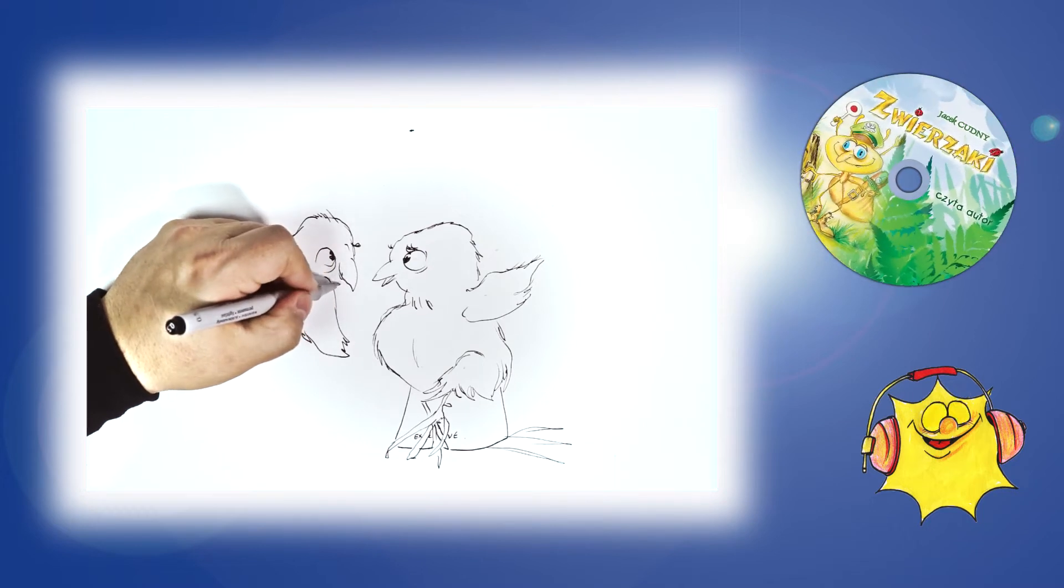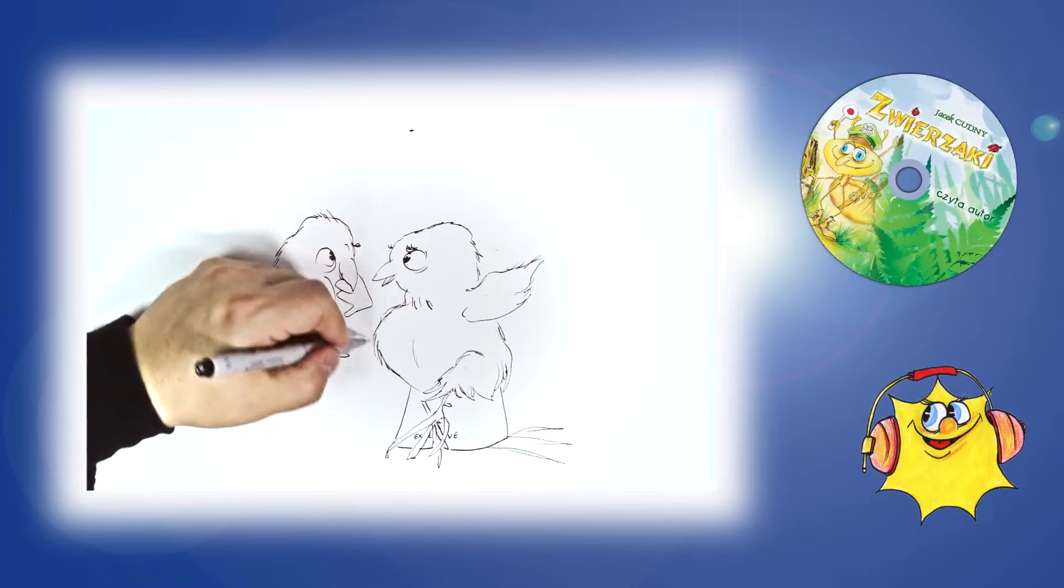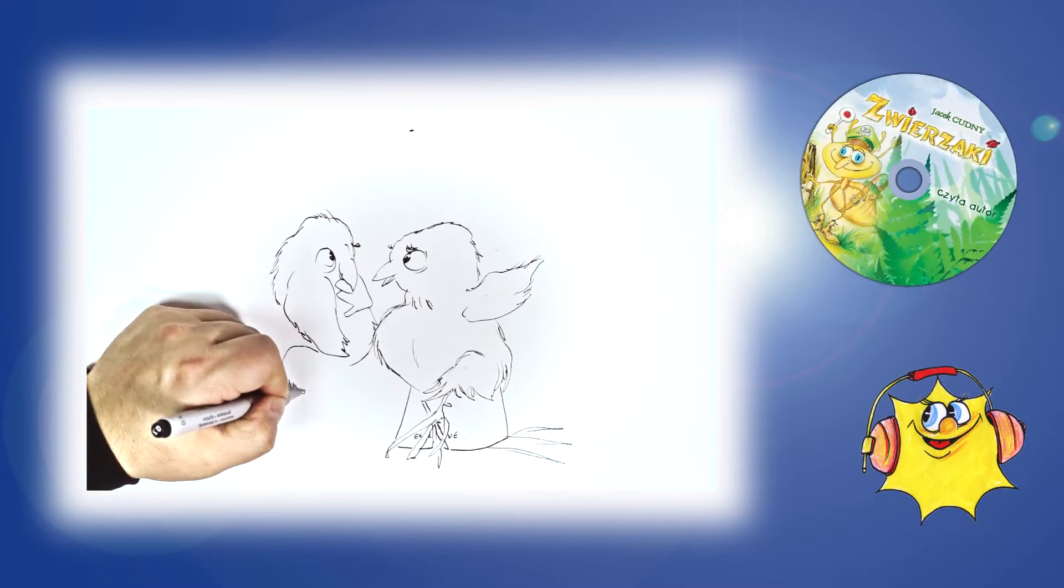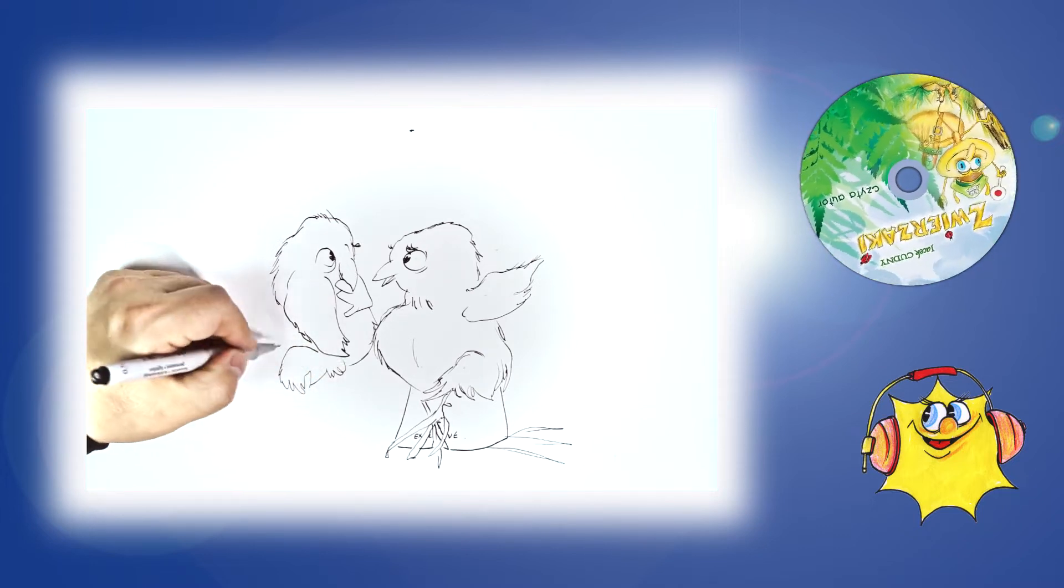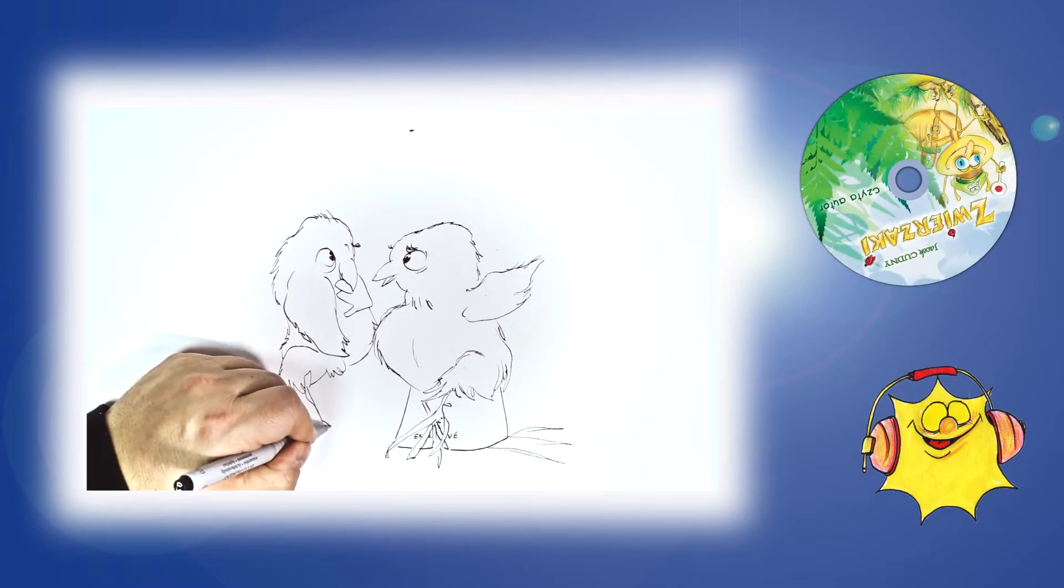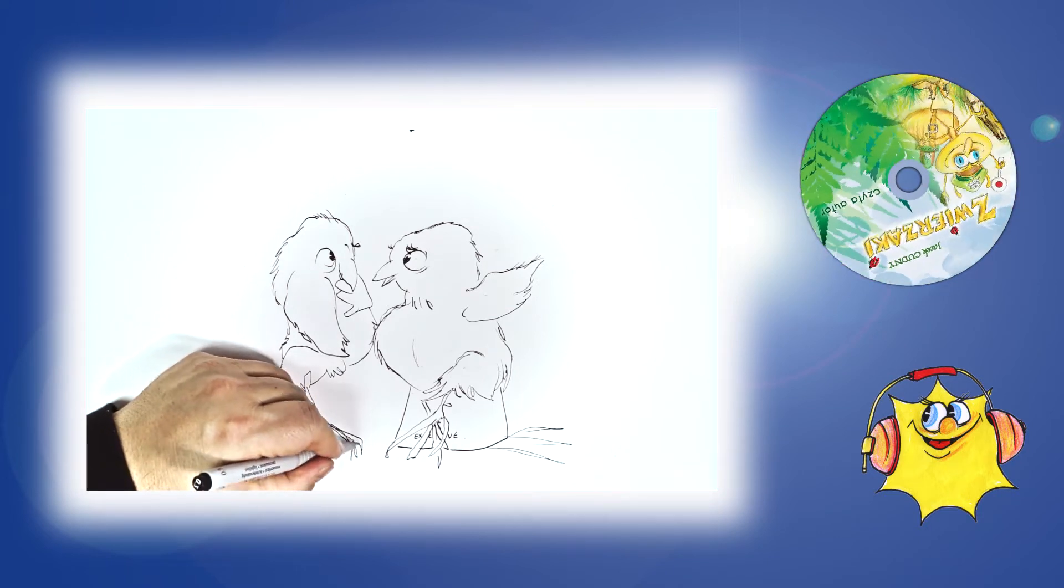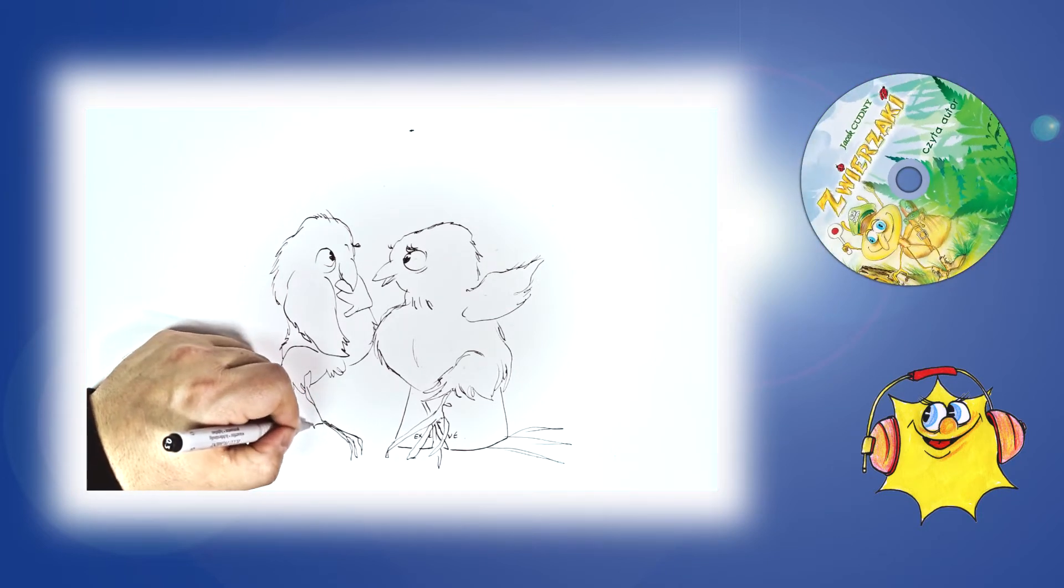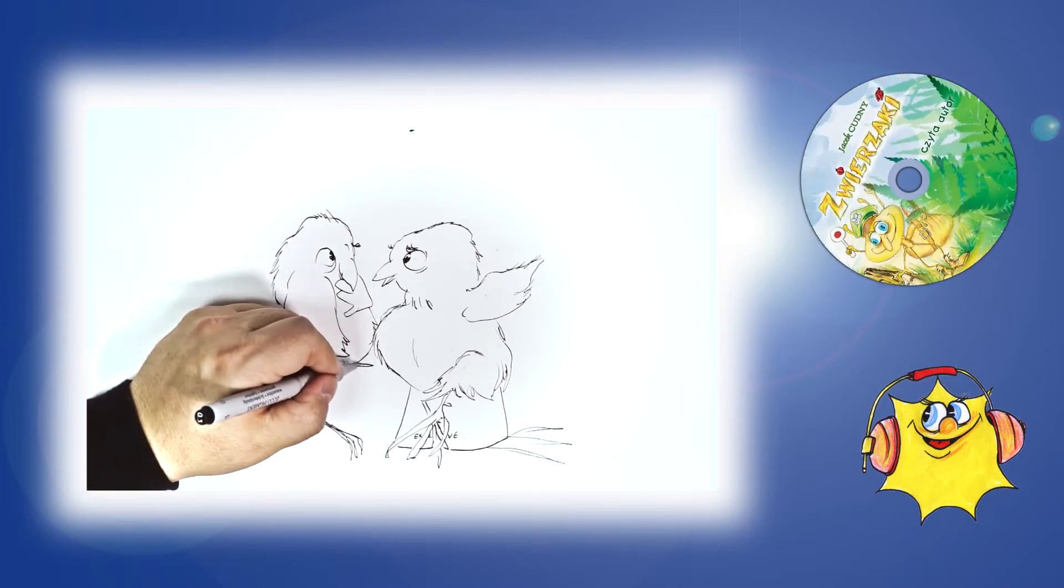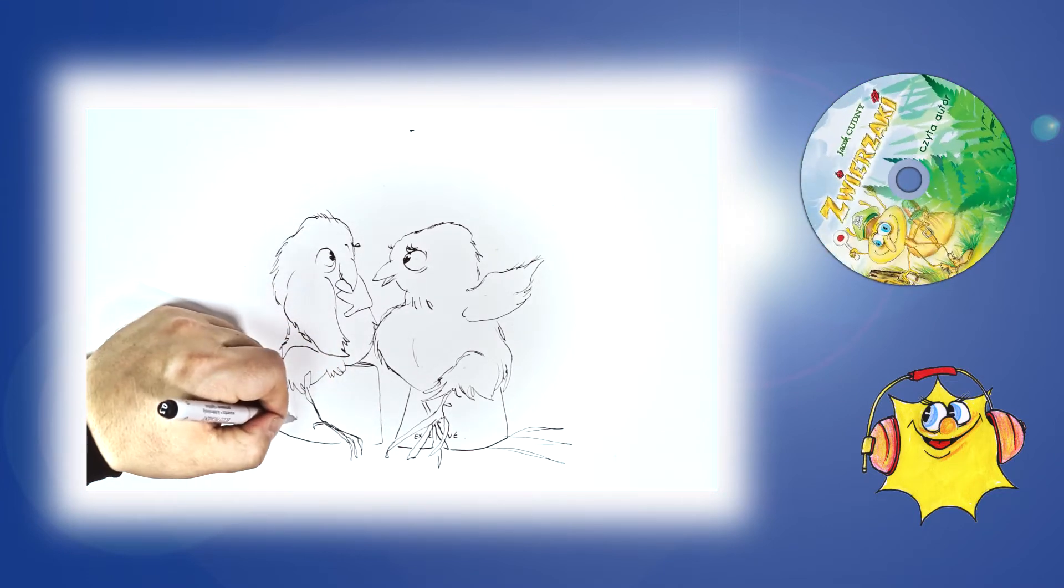omawiając podczas gadki, jakie dręczą je zagadki. Rzekł więc kurczak do kurczaka - Męczy strasznie mnie zagadka, kiedy dzionek światem rządzi, to gdzie nocka wtedy błądzi? Drugi pisklak myślał krztynę, potem zrobił mądrą minę i powiedział - Zdradzę ci, pani nocka we dnie śpi.